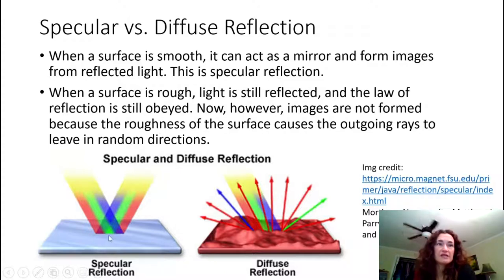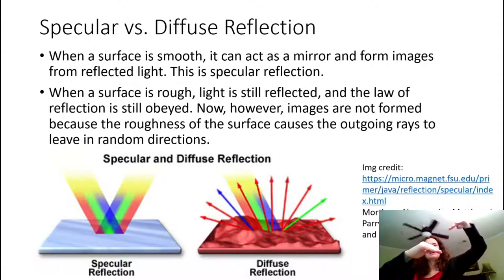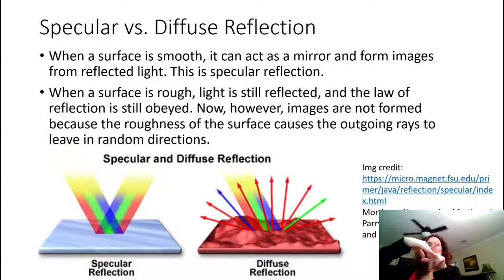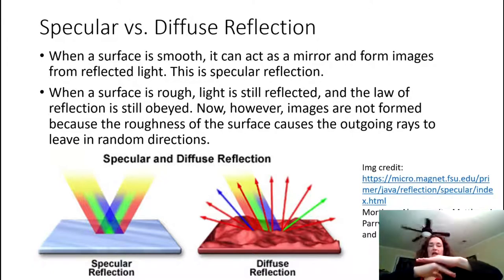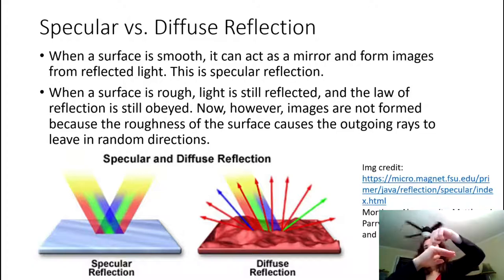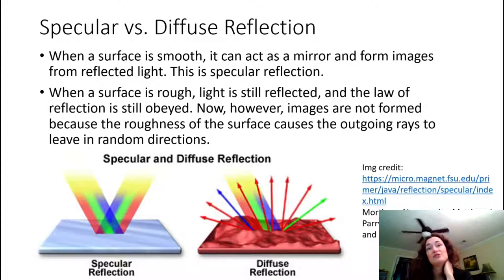The angle of incidence equals the angle of reflection in both specular and diffuse reflection. In diffuse reflection, the surface is rough. For example, taking the curve of my hand as a bump on a surface — if the light comes in and reflects, my surface is inclined so the surface normal points in a different direction, sending the reflected ray at a different angle. Surface roughness causes light to be reflected in all kinds of directions, even if it comes in parallel, which is why you don't get pretty images from diffuse reflection.